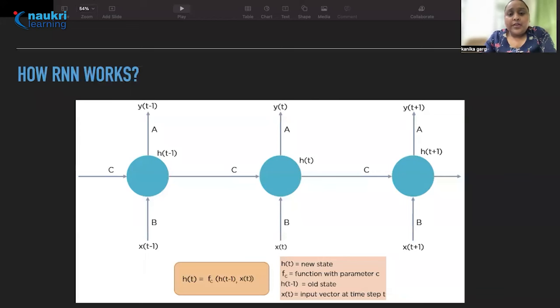Now here as you can see that the input layer x takes in the input to neural network and processes it and passes into the middle layer. The middle layer H can consist of multiple hidden layers each with its own activation functions and weights and biases. If we have a neural network where the various parameters of different hidden layers are not affected by the previous layers, the neural network does not have the memory. Then you can use a recurrent neural network. It will standardize the various activation functions and weights and biases so that each hidden layer has the same parameters. Then instead of creating multiple hidden layers, it will create one loop over it as many times as it requires to refine our result.